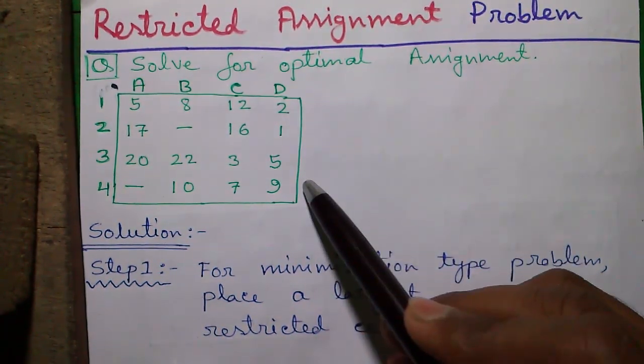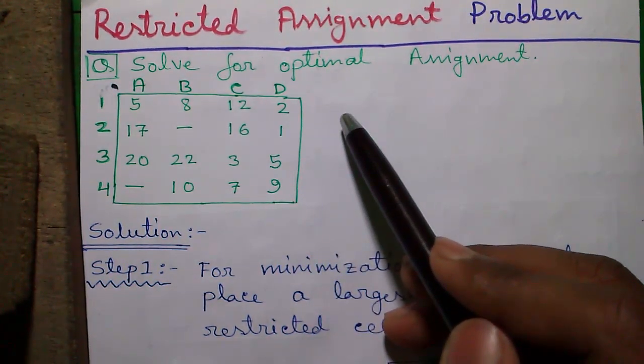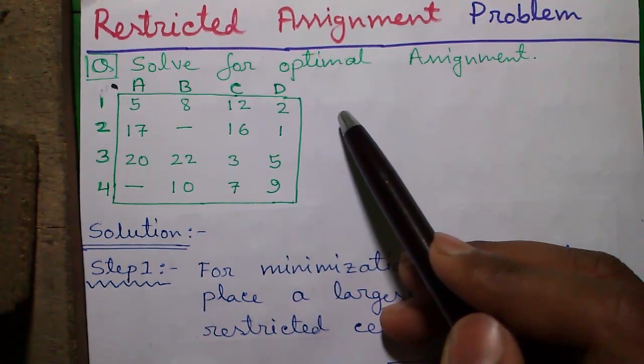So this is a minimization type problem. Our objective is to assign 4 machines to 4 persons in such a way so that our total assignment cost is minimum.